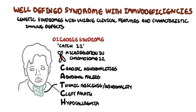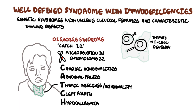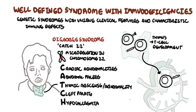Immunodeficiency in DiGeorge syndrome results from an abnormal thymus, because the thymus is normally where T cell development occurs early on. T cells then move to the lymph nodes and become activated. T cells are important for two main reasons: they stimulate B cells, which are your antibody-producing cells, and they destroy infected cells. When there is no or abnormal thymus, this means deficiency in T cells, which subsequently means B cell dysfunction. Without B cells and without antibodies, you increase the risk of infections.